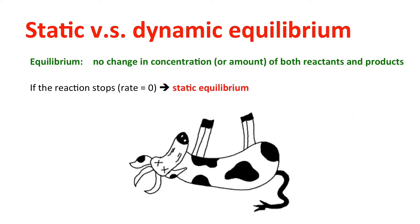Let me introduce equilibrium. Equilibrium means there is no more change in concentration in both reactant and product. One way this can happen is if the reaction stops — we call this static equilibrium. Just like a cloud that is still and cannot move anymore, we can say the activity has stopped.